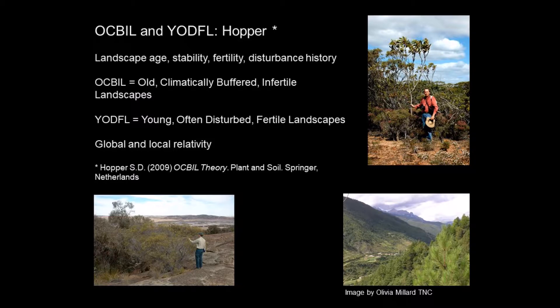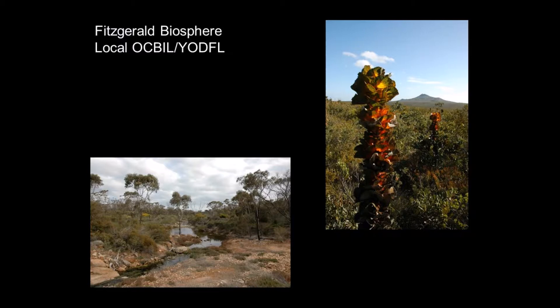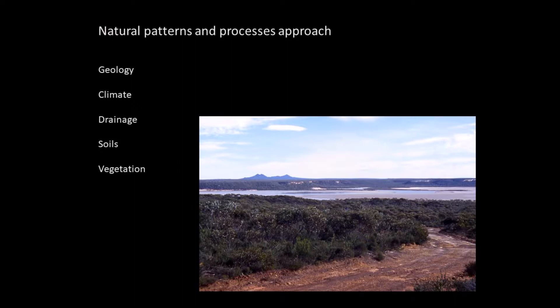Now we focus in on local OCBIL and YODFIL here in Fitzgerald Biosphere. One picture shows Mount Bland in the Western Barrens with Royal Hakea — almost endemic to Fitzgerald River National Park, charismatic, a member of the Proteaceous family, occupying old landscapes. The other picture shows Bremer River on the western side of Fitzgerald Biosphere, with Yate Woodland and Melaleuca Shrublands in a dynamic YODFIL. So there's an OCBIL with the Royal Hakea and a YODFIL with the creek system. I'll introduce the Natural Patterns and Processes approach, which looks at geology, climate, drainage, soils and vegetation.